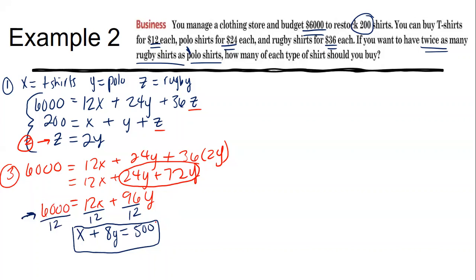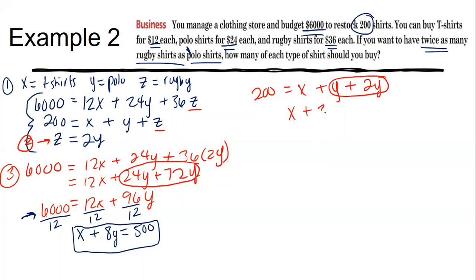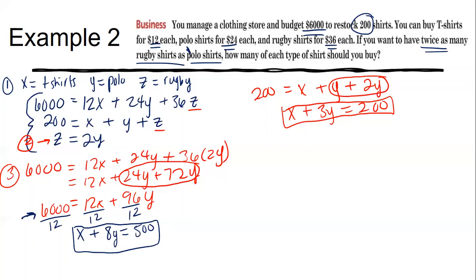Now find the second two-variable equation by substituting z = 2y into equation two: 200 = x + y + 2y. Combine like terms: x + 3y = 200. That's the second two-variable equation. Any questions on step three? We substituted, distributed, combined like terms, and simplified.